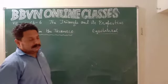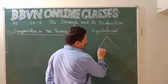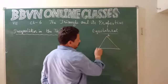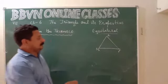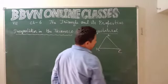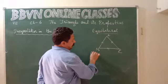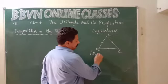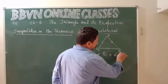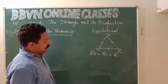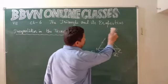The first special type is the equilateral triangle. Any triangle in which all three sides are of equal length is called an equilateral triangle. The length of all three sides will be equal — the length of side AB will be equal to the length of side BC, which will be equal to the length of side AC.